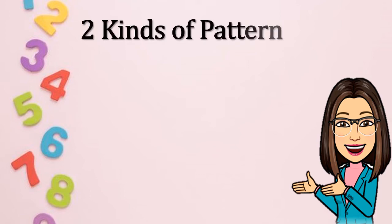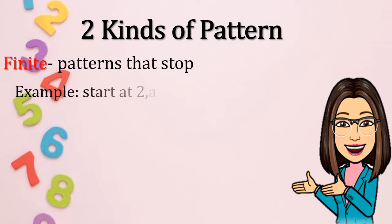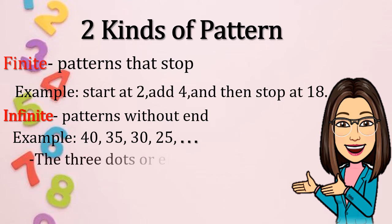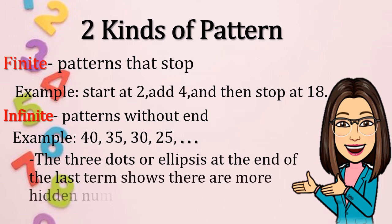There are two kinds of patterns. One is finite pattern. These are patterns that stop. Example: start at 2, add 4, and then stop at 18. Another is infinite pattern. These are patterns without end. Example: 40, 35, 30, 25, dot dot dot. Or these three dots or ellipses at the end of the last term shows there are more hidden numbers.